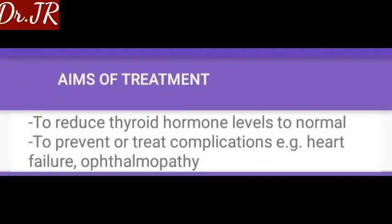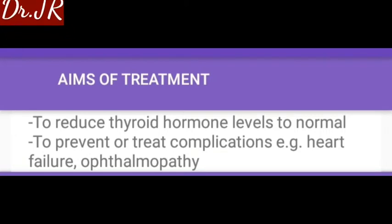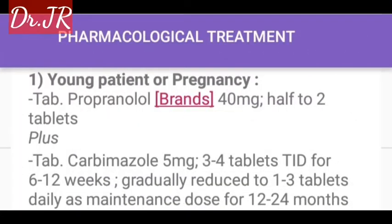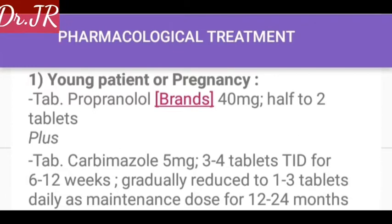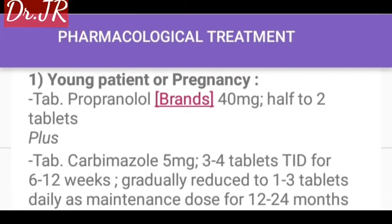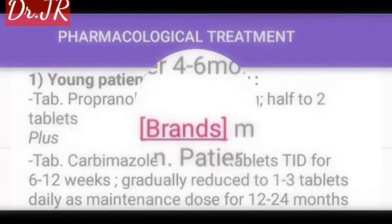The aims of treatment are to reduce thyroid hormone levels to normal and to prevent or treat complications such as heart failure and ophthalmopathy. For pharmacological treatment of Graves' disease in young patients or during pregnancy: tablet propranolol 40 mg, half to two tablets, plus tablet carbimazole 5 mg, three to four tablets three times a day for 6 to 12 weeks, gradually reduced to one to three tablets daily as a maintenance dose for 12 to 24 months.